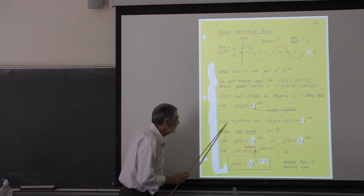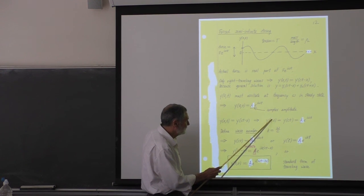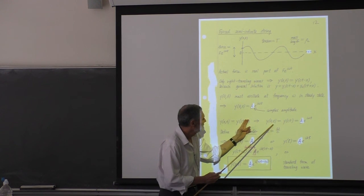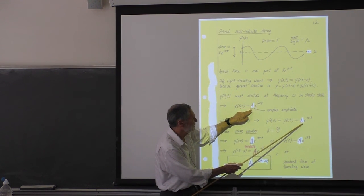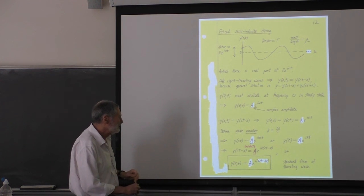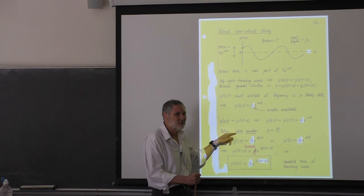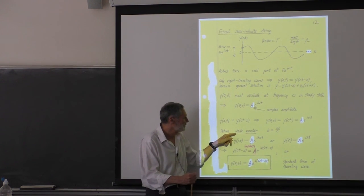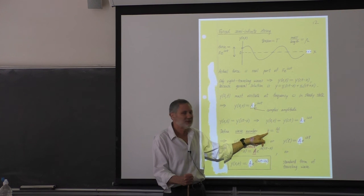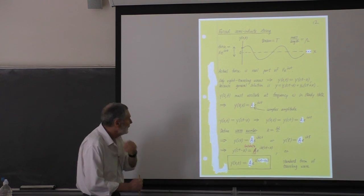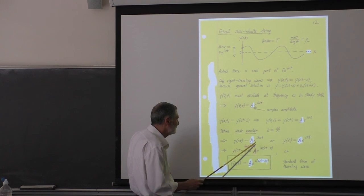Our function of x and t can only be a function of ct minus x because it's a right-traveling wave. At x equals zero, that gives y of ct, and we set it equal to a complex amplitude times e to the i omega t. At this point it's convenient to introduce the wave number k, defined as omega divided by c, so that omega equals ck.